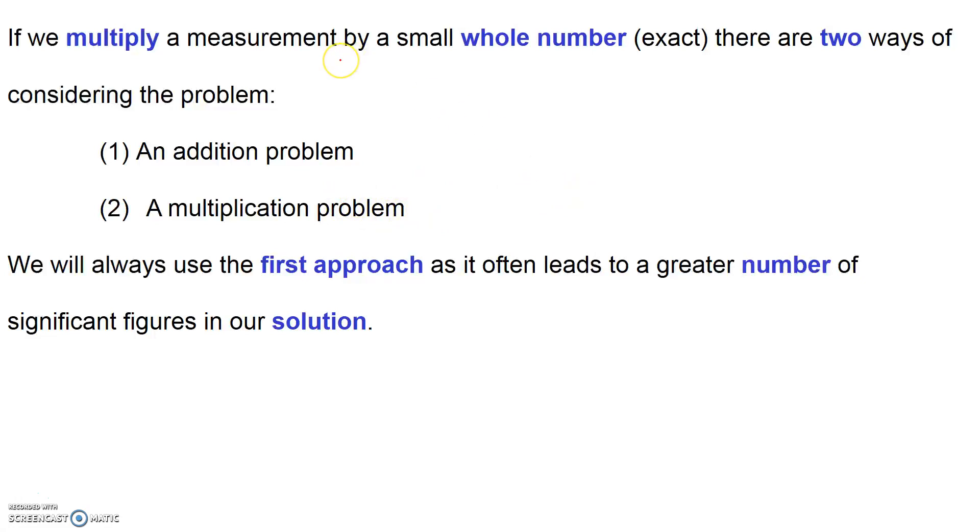There's another issue that can arise when we're using exact numbers, and that is when we multiply a measurement by a whole exact number. If this number is small, there's two ways that we might think about doing this problem. One is we might treat it as an addition problem where we just add up the size of all our measured numbers. Or we might consider it to be a multiplication problem where we take our measured number and multiply it by that small whole exact number.